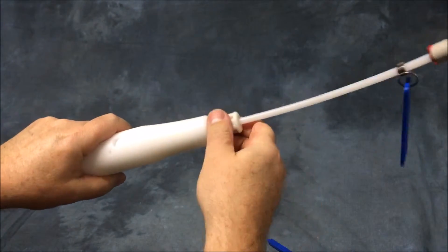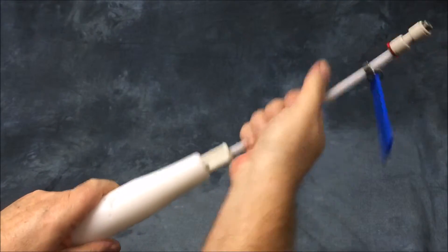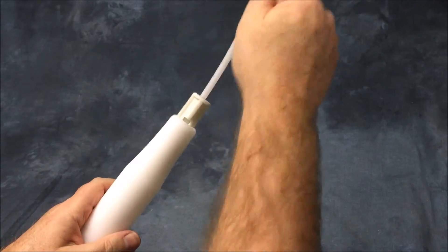That little squeak sound tells you that it's tight. What you want to do is pull this as hard as you can to make sure that it doesn't come loose. So now your trigger line is attached to your pneumatic actuator.